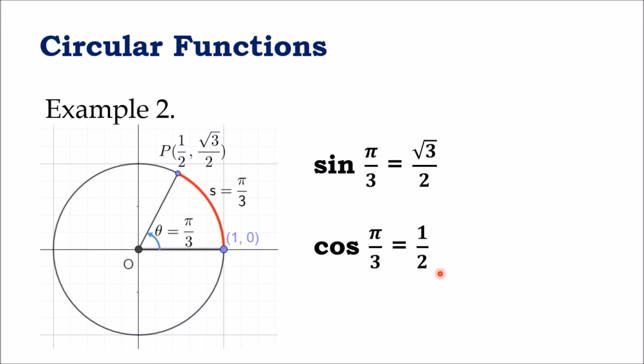Let's have another example. Looking at this, it's a unit circle with central angle theta equal to π over 3. And the point on the terminal side on the unit circle is P with x-coordinate 1/2 and y-coordinate √3 over 2.